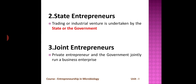The second type is state entrepreneur. When trading or industrial activity is undertaken by the state or government, it is called a state entrepreneur. The third type is joint entrepreneur — when a private entrepreneur and the government jointly run a business enterprise, it is called a joint entrepreneur.